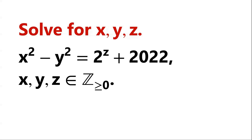Solve for non-negative integers x, y, z, satisfying x squared minus y squared equals 2 to the power of z, plus 2022.